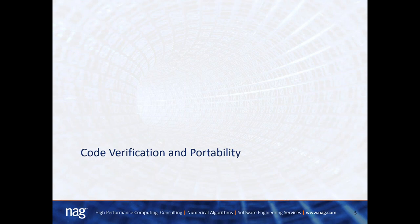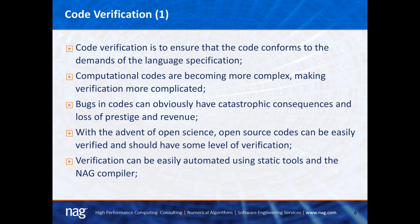I'll now talk about code verification and why it's important. Code verification ensures that the code conforms to the demands of the language specification. A lot of computational codes are becoming very complex, making verification more complicated. Examples include large weather simulation codes which couple multiple packages. Bugs in codes can have catastrophic consequences — loss of results, loss of prestige and revenue. You could even be sued if you have a bug in your code.